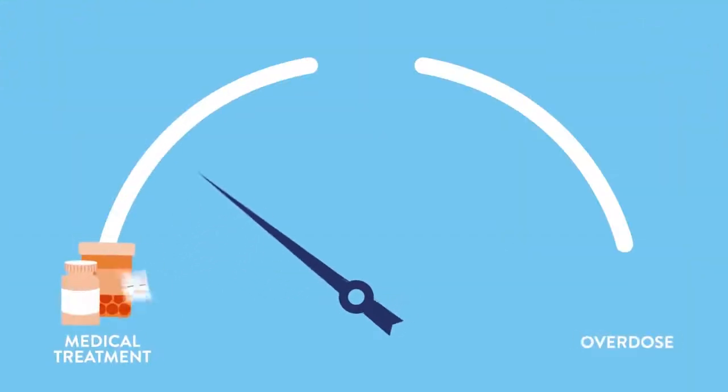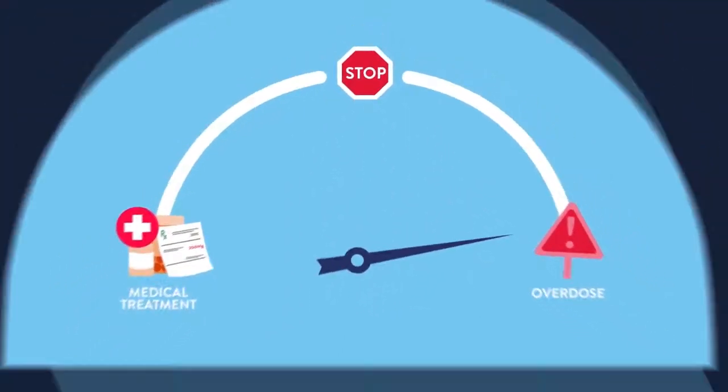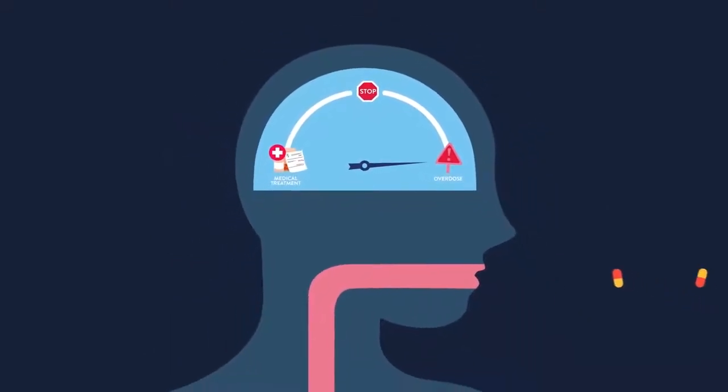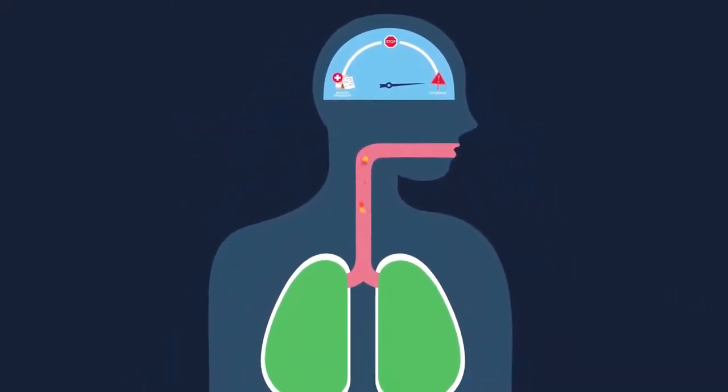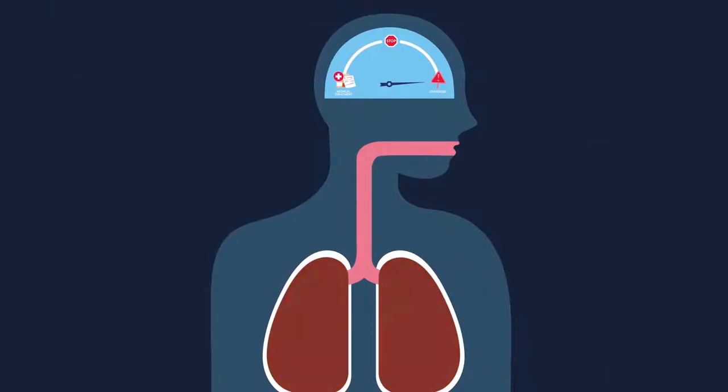One especially risky time for people with opioid use disorder happens when they experience a change in their tolerance. If people haven't used for a while, and if they take their old amount, it's more than their bodies can handle. This can be fatal.